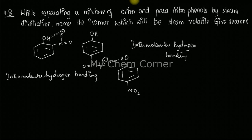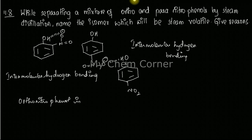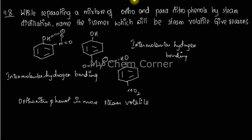So in orthonitrophenol we have intramolecular hydrogen bonding, whereas in paranitrophenol we have intermolecular hydrogen bonding. With respect to steam volatility, orthonitrophenol is more steam volatile. This is because of its lower association — in intermolecular hydrogen bonding, one molecule is bonded to the next and so on.